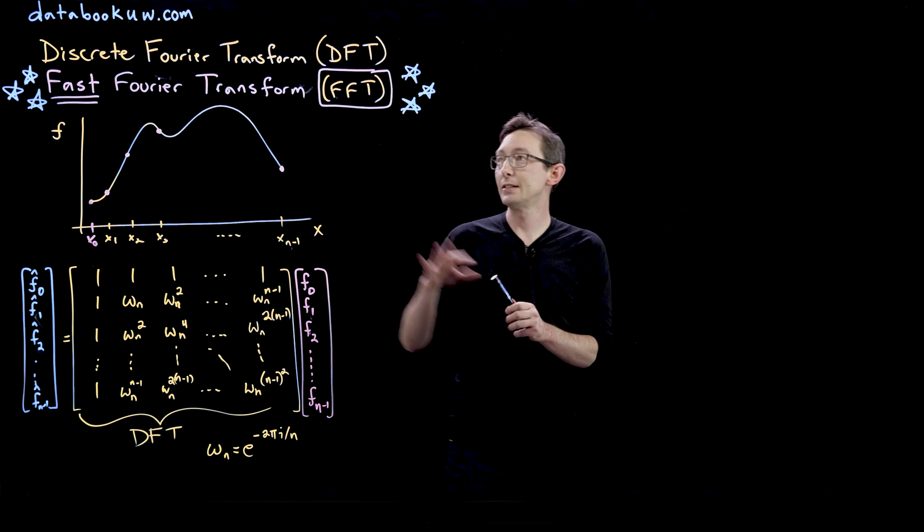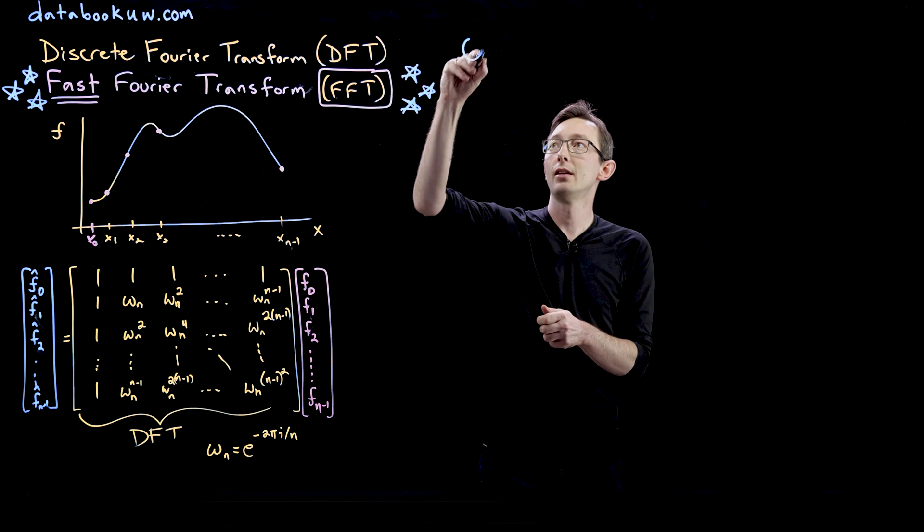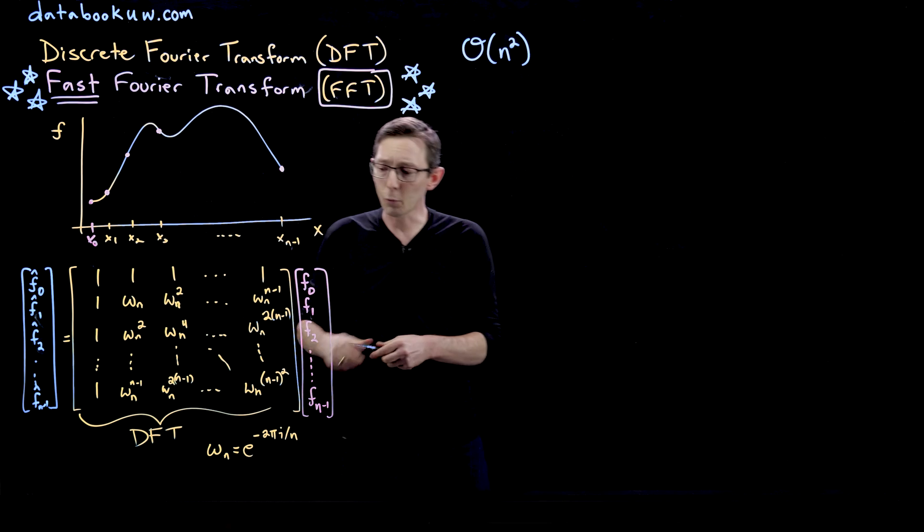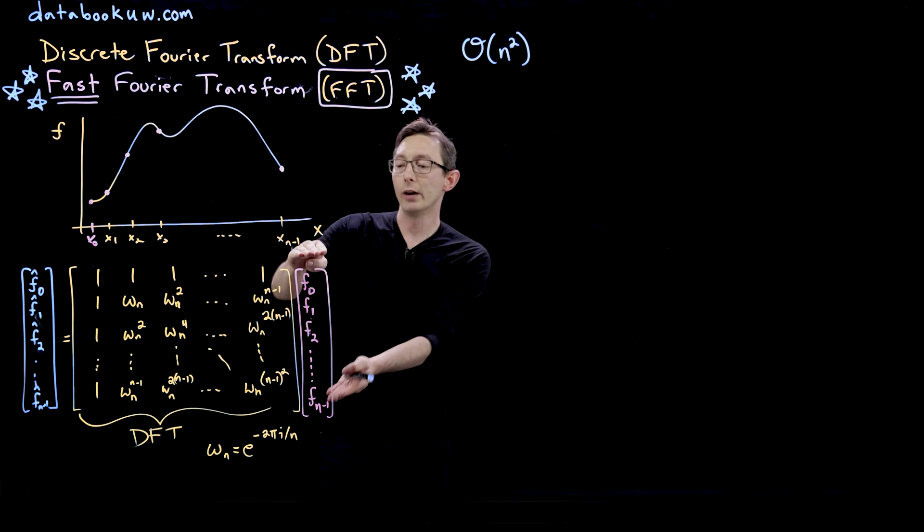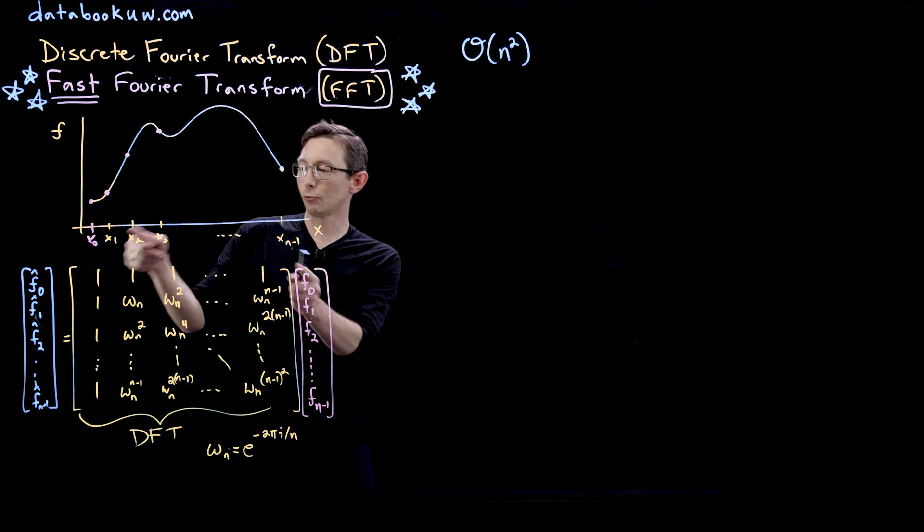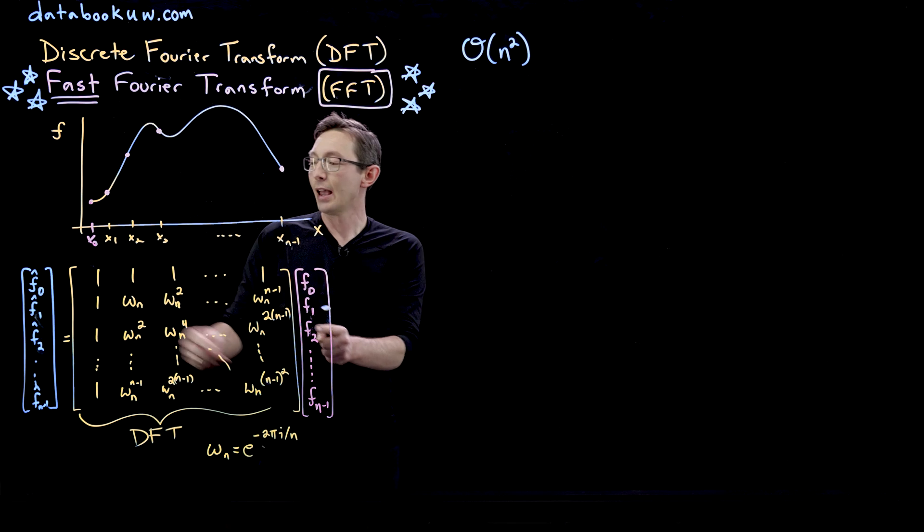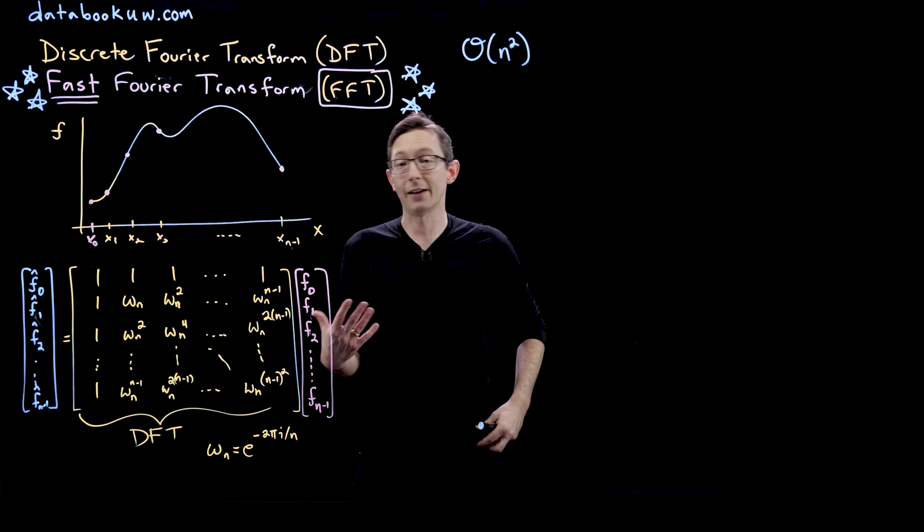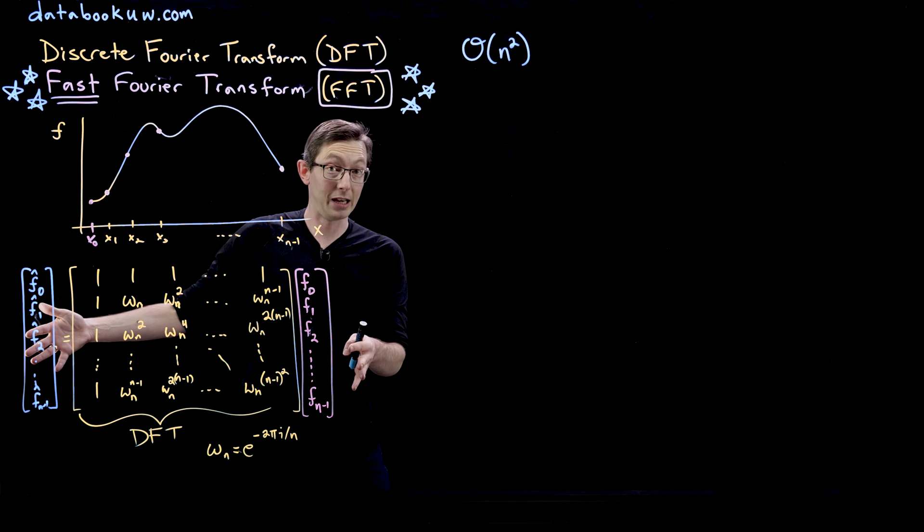The real reason we need the FFT is speed or efficiency. The DFT calculation is what we call an order n-squared calculation. If I have n pieces of information in my data vector, when I multiply that by this n-by-n matrix, each row times column multiplication is n multiplications, and I have n of those rows, so there are n-squared total multiplications I have to perform to do this discrete Fourier transform matrix multiplication.